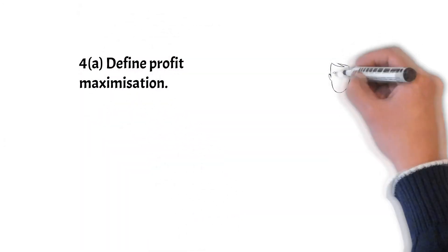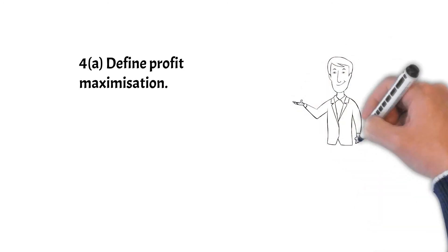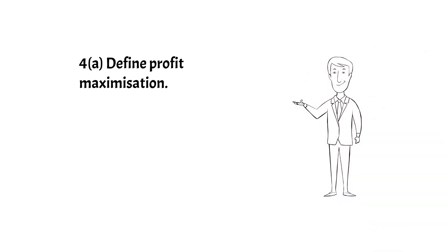Next question, time for 4a: define profit maximization. Okay, straight up definition here. When a firm produces at the level of output which makes the highest profits for the firm, or when a firm produces where the gap between total revenue and total cost is largest.